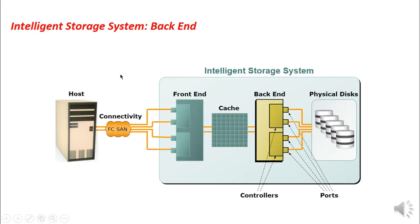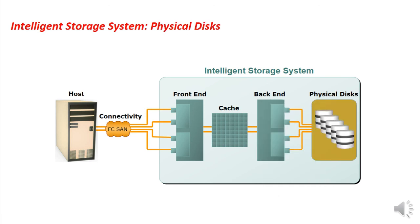The back end of the Intelligent Storage System has back end ports and back end controllers. Back end ports provide connectivity to the physical disks or array of storage, while back end controllers perform operations such as error correction and data integrity checking. The physical disks actually store the data received from the host and are used to fetch data required by the host, potentially implementing data protection techniques such as RAID.